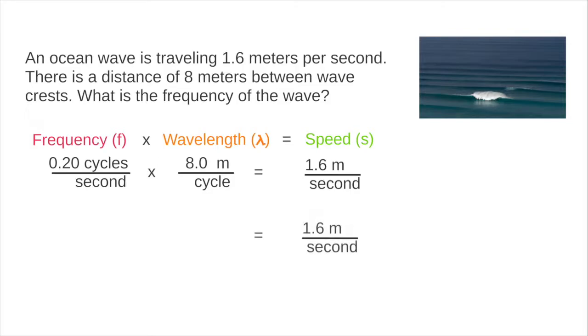Now say the wave speed remains constant, but the distance between waves increases to 24 meters. What is the new frequency? Notice that the wavelength is increased by a factor of 3. Therefore, the frequency must be cut in third to keep speed constant. That gives 0.067 cycles per second.